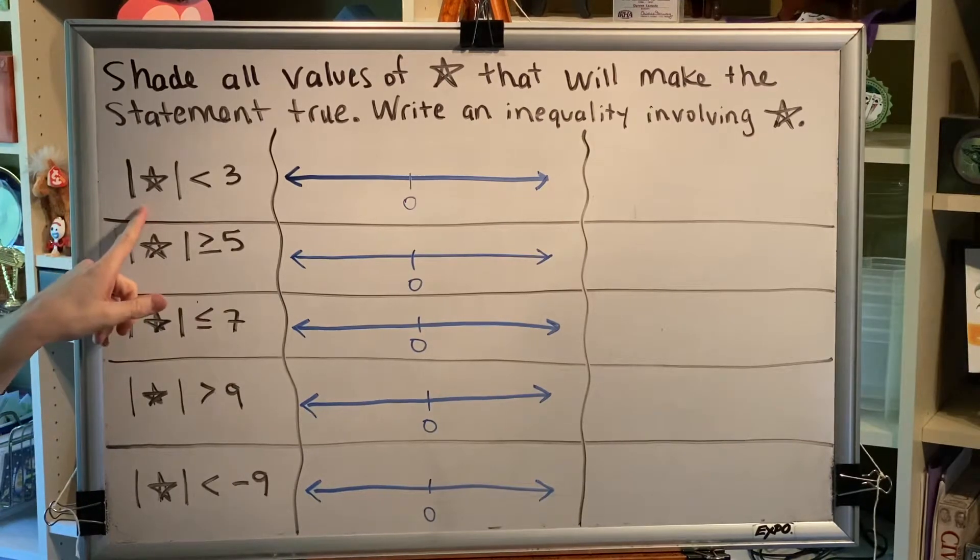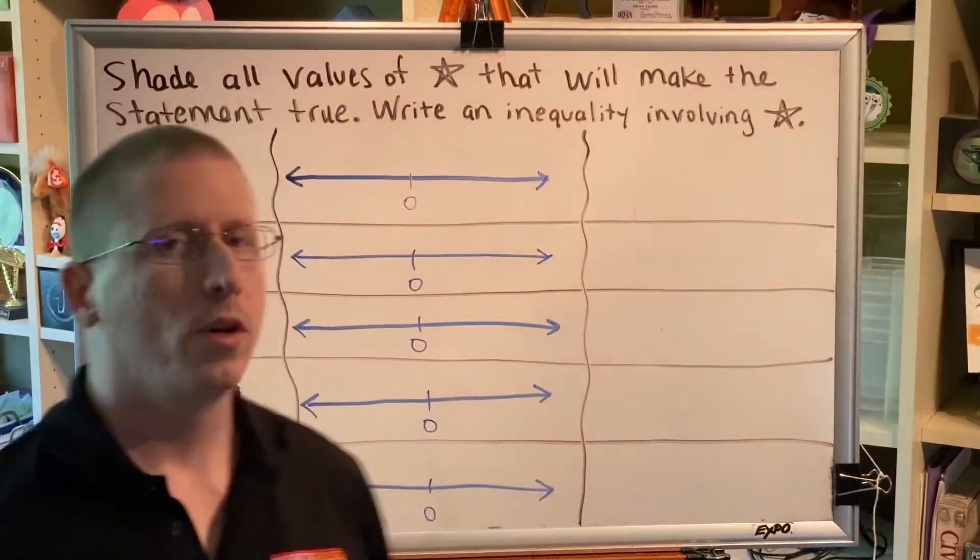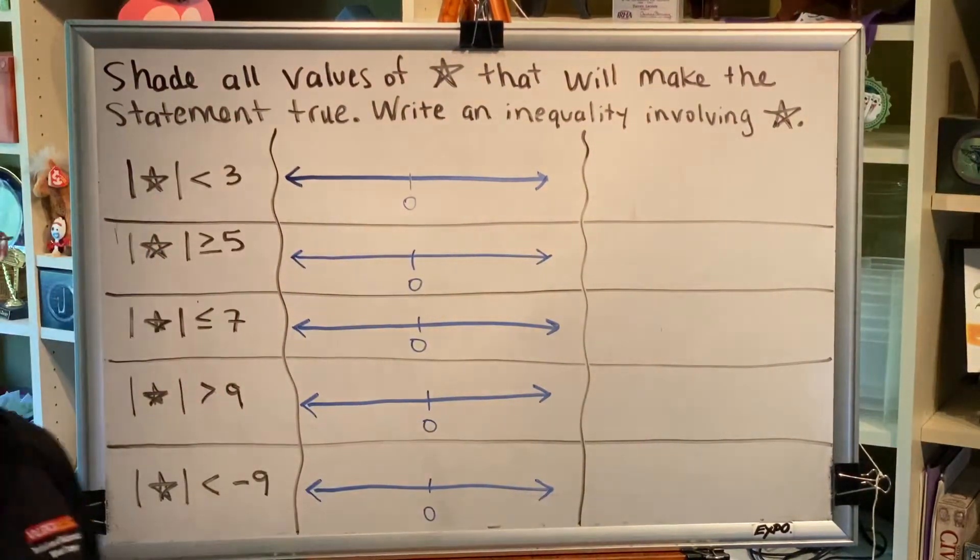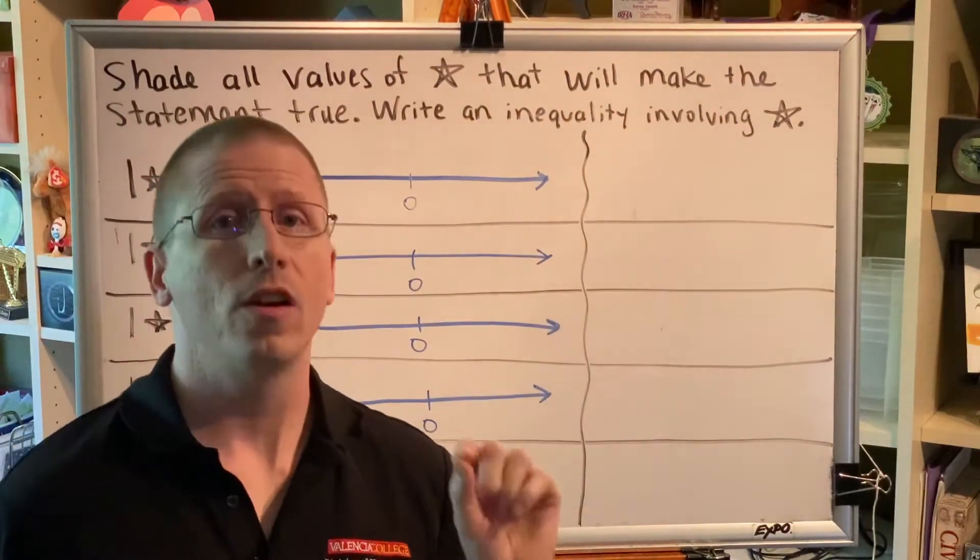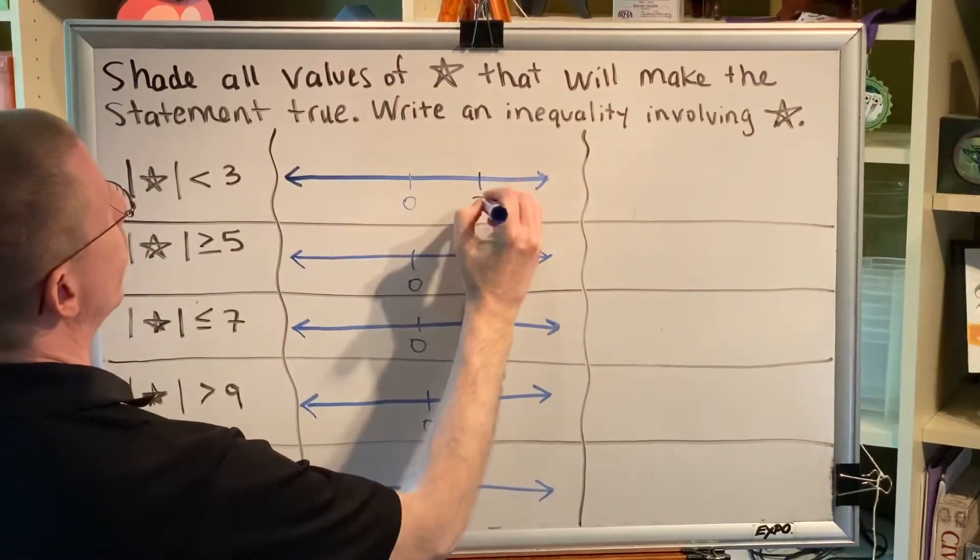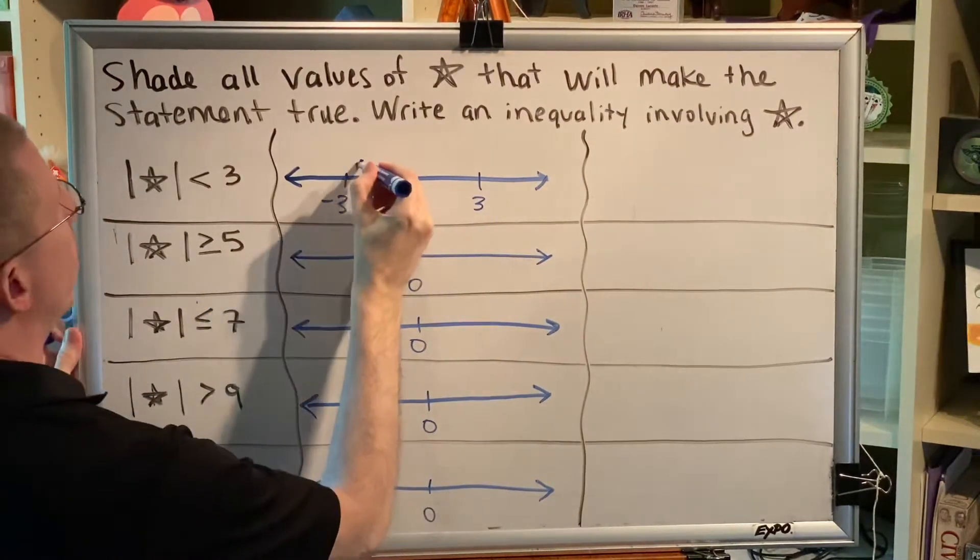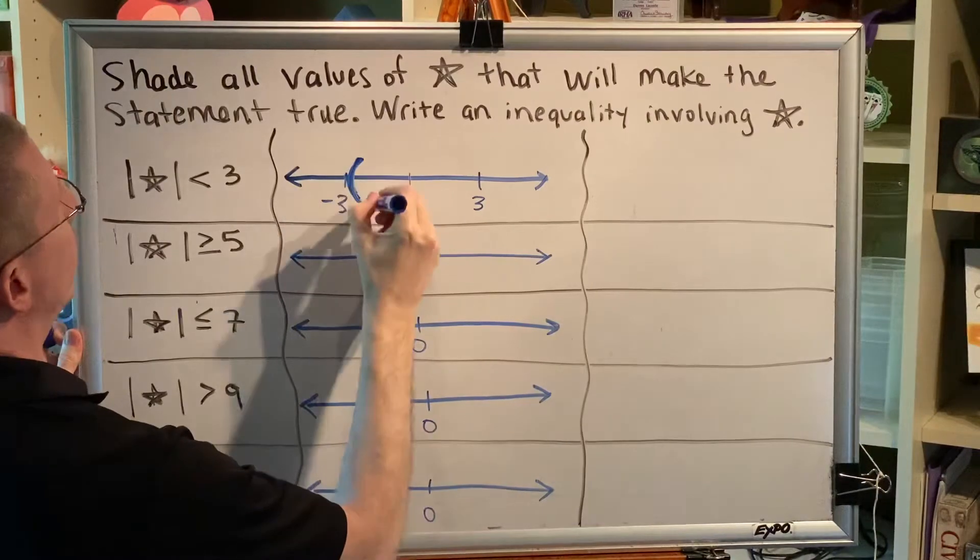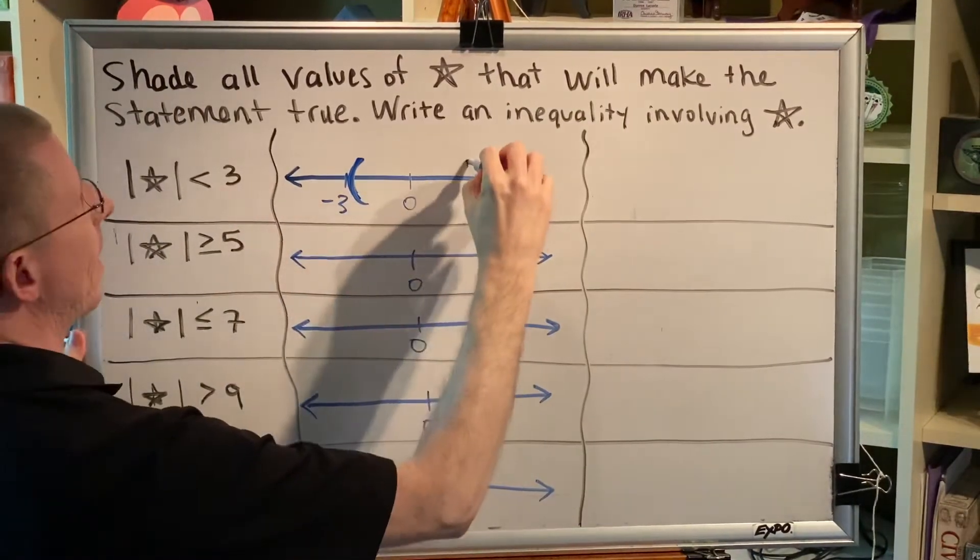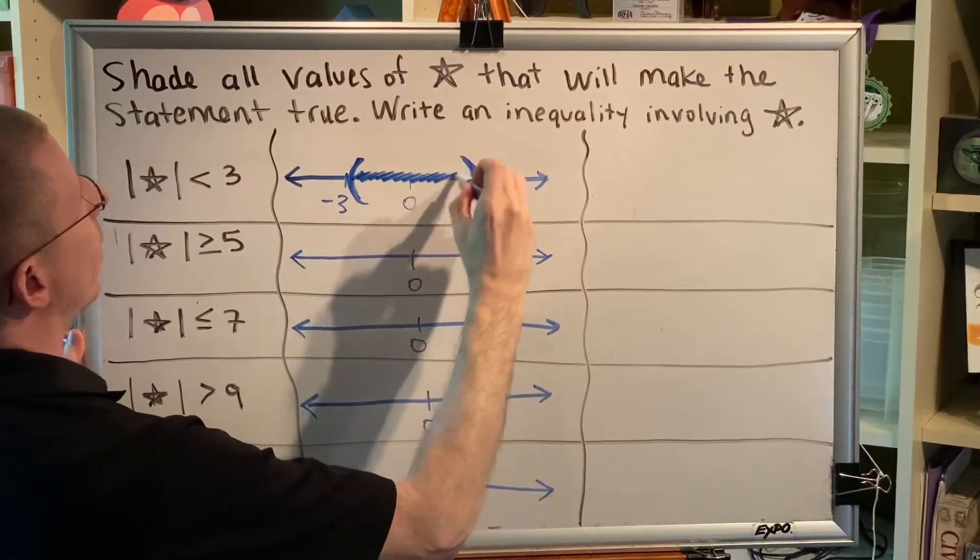First, absolute value of star is less than 3. Remember, absolute value of star is kind of like distance from 0. So we're saying that the distance from 0 is less than 3. That's like a dog on a leash. So the dog can go three steps to the right or three steps to the left, but not any further away than that. Because the symbol says less than as opposed to less than or equal to, we use parentheses when we create our shading.